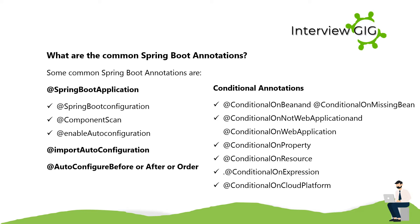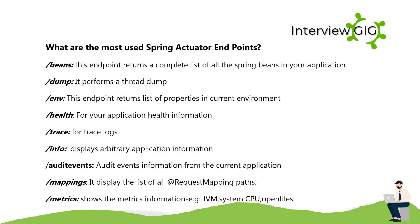What are the most used Spring Actuator endpoints? /beans — returns a complete list of all the Spring beans in your application. /dump — performs a thread dump. /env — returns a list of properties in the current environment. /health — shows your application health information. /trace — for trace logs.